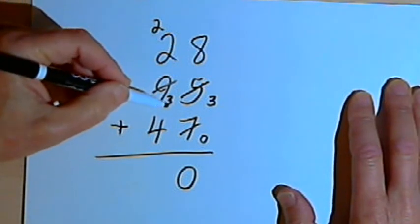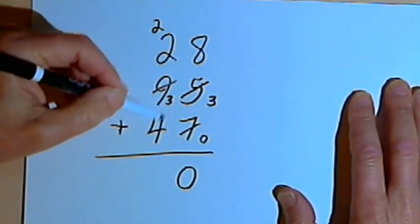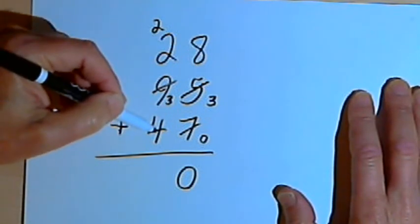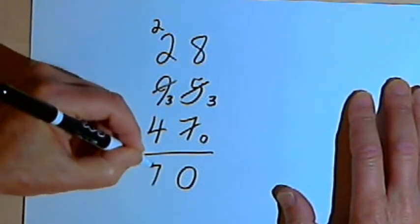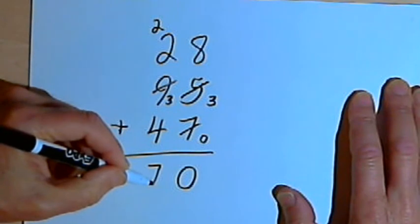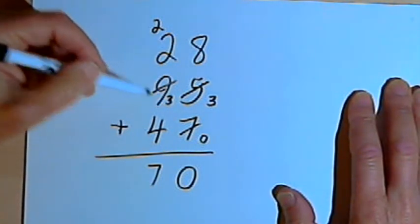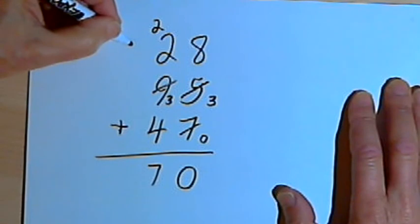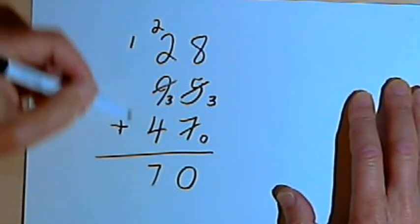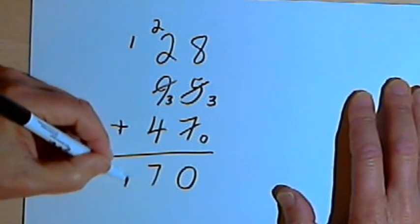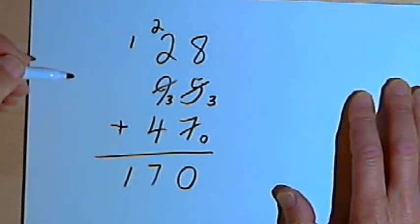Then I can take that 3 and add 4. I get a 7. 7 is a one-digit number, so I'll just write the 7 down where the sum goes. And I'll count my scratches. I have one scratch, so I'll bring a 1 over. I'll carry 1 over into the next column, the hundreds column. There's nothing else in that column, so I'll bring that 1 down, and I get 170.